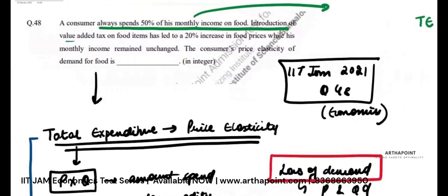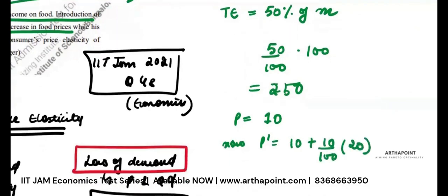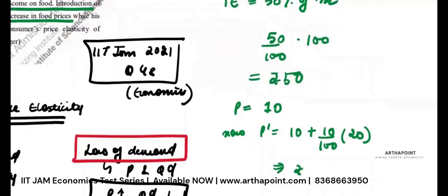It says there is a value added tax on food items that has increased the price of food. Suppose the price of food initially was 10 rupees. Now with a 20% increase, 10 plus 20% of 10, the price of food will become 12 rupees. The price has increased from 10 to 12.